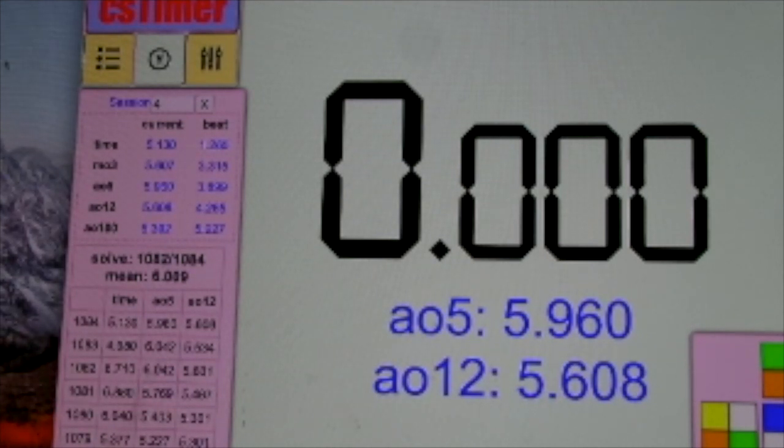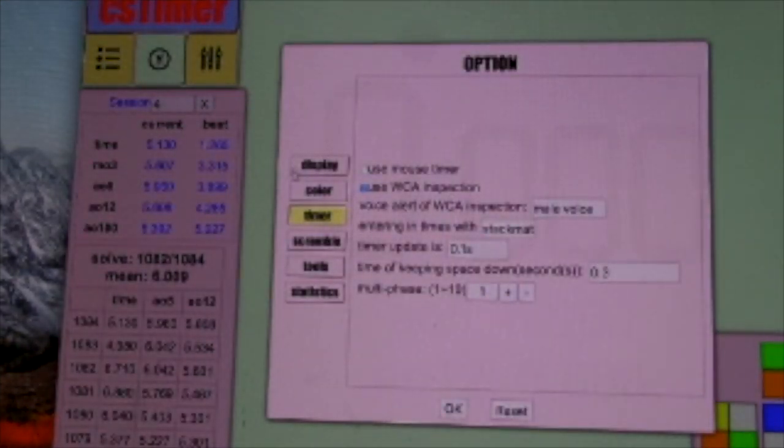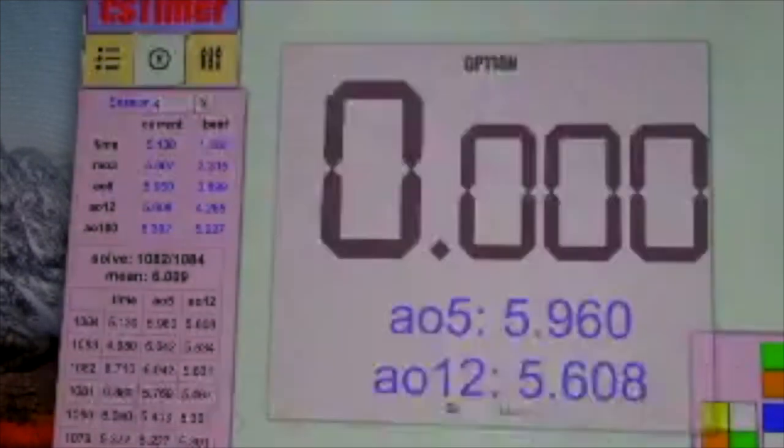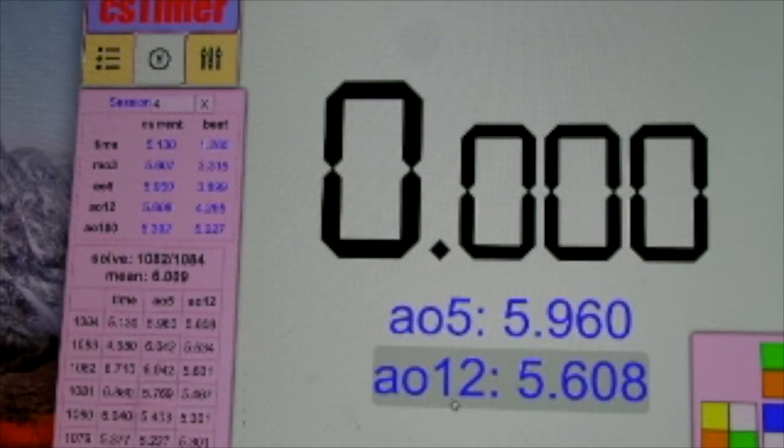So for setting my timer, I had CS Timer. You click on options over there, and then there's this timer option. There's entering times with timer, typing, stackmat, and virtual. You just have to click on stackmat and then you can start using your timer on this.